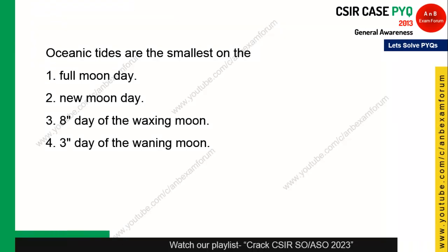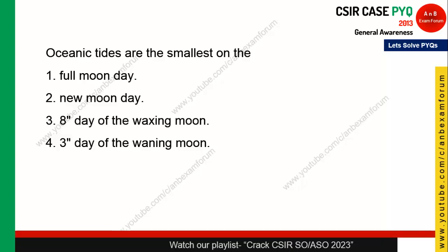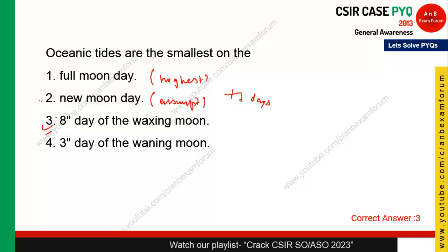Oceanic tides are smallest on which day? Students generally assume it is on the new moon day, but that is wrong. On the full moon day, oceanic tides are highest — that is certain. The smallest tides occur approximately seven days from new moon or full moon, which is the eighth day of the waxing moon — a quarter moon phase. Option 3 is the correct answer. This is a difficult one you should remember.